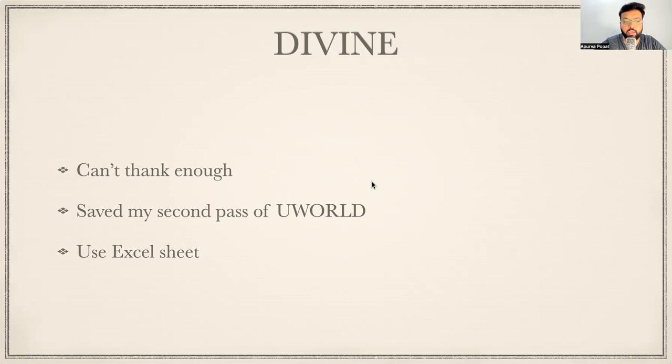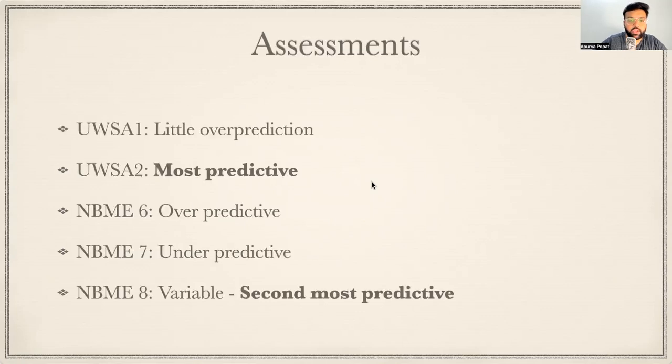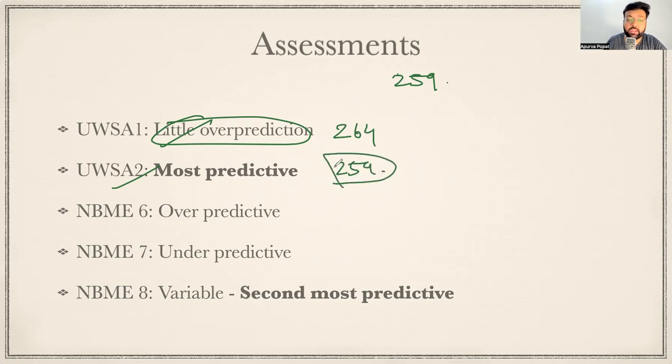That's your Divine Intervention podcast. Which assessments to be given? I gave UWSA1, I gave UWSA2. UWSA1 was a little over-predictive for me - like for example, if I scored 259 on Step 2, I got 264 on UWSA1 and I got 259 on UWSA2. So according to the data and even my scores, UWSA2 was the most predictive. So any score, I would say, if it is 250 plus, even if you are aiming 260s, that's okay. Any score 250 plus is in a good spot to give your exams and perform well.